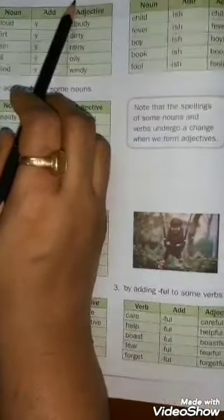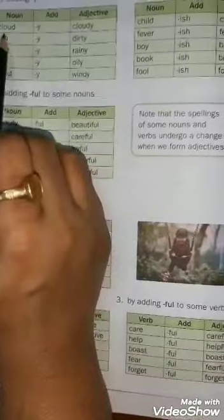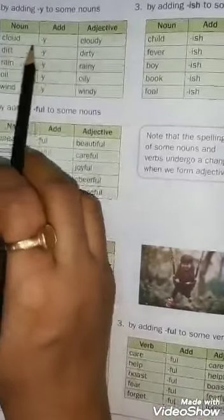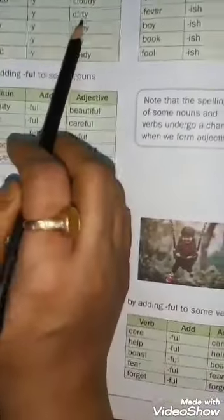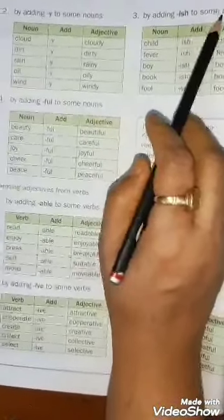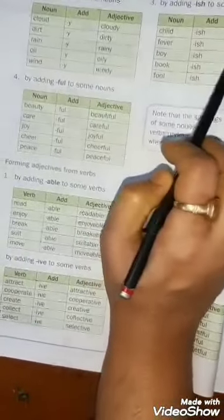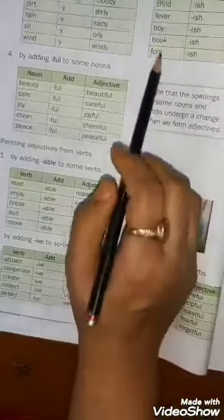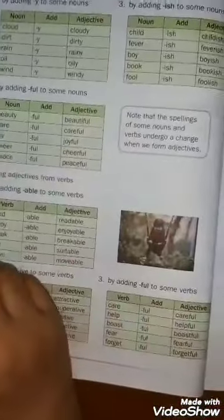Second method: by adding -Y to some nouns, it forms an adjective. Examples: cloud + y = cloudy; dirt + y = dirty; rain + y = rainy; oil + y = oily; wind + y = windy. Third method: by adding -ISH, it forms an adjective. Examples: child + ish = childish; fever + ish = feverish; boy + ish = boyish; book + ish = bookish; fool + ish = foolish.